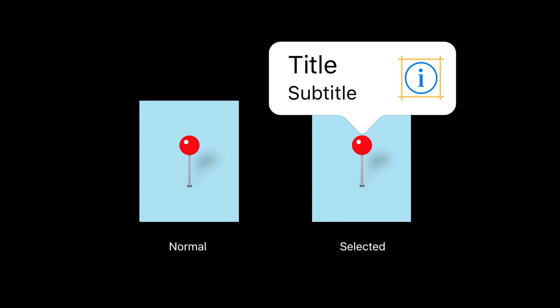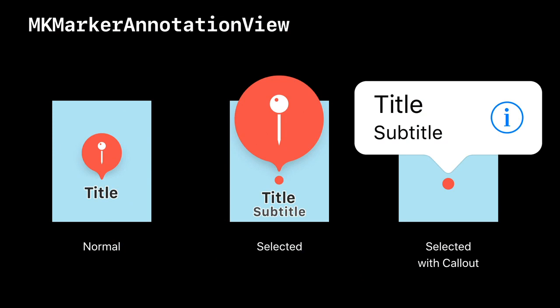If you add, for instance, a right accessory view to the callout, there's no natural location within the big marker to display that data. It's even more obvious with a detail view where you can put a full place card of data. So in practice, marker annotation views have three states: normal (unselected), selected, and selected with callout — which we use if you configure the marker annotation with views that cannot be displayed in the marker alone. Let's look at the code.